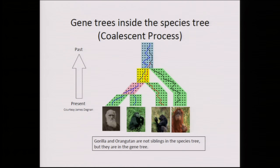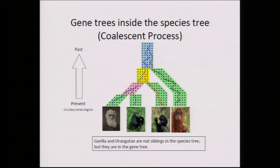The dominant cause of gene tree discordance is something called incomplete lineage sorting, which Molly already talked about. It happens when you have either very large population sizes or very short times between speciation events, causing gene trees to be different from each other and from the species tree. That's the problem I'll be talking about today. This is modeled mathematically by the multi-species coalescent, which has a forward and backwards model, but they're equivalent.